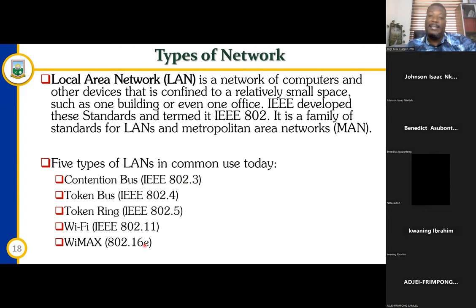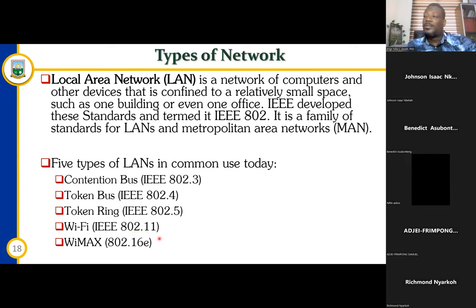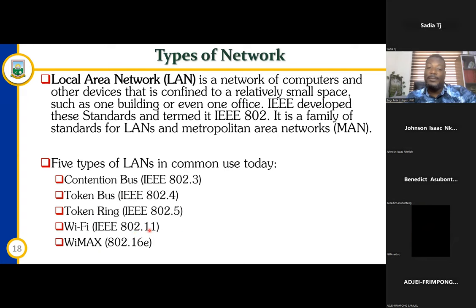These are the ones and the standards that IEEE comes with. The contention bus, the token bus, the token ring, Wi-Fi — that is 802.11 — and wire marks. The Wi-Fi standard is 802.11; anytime you connect to Wi-Fi, this is the standard that we normally work with. I want you to know each of these and the respective standards that come with them.